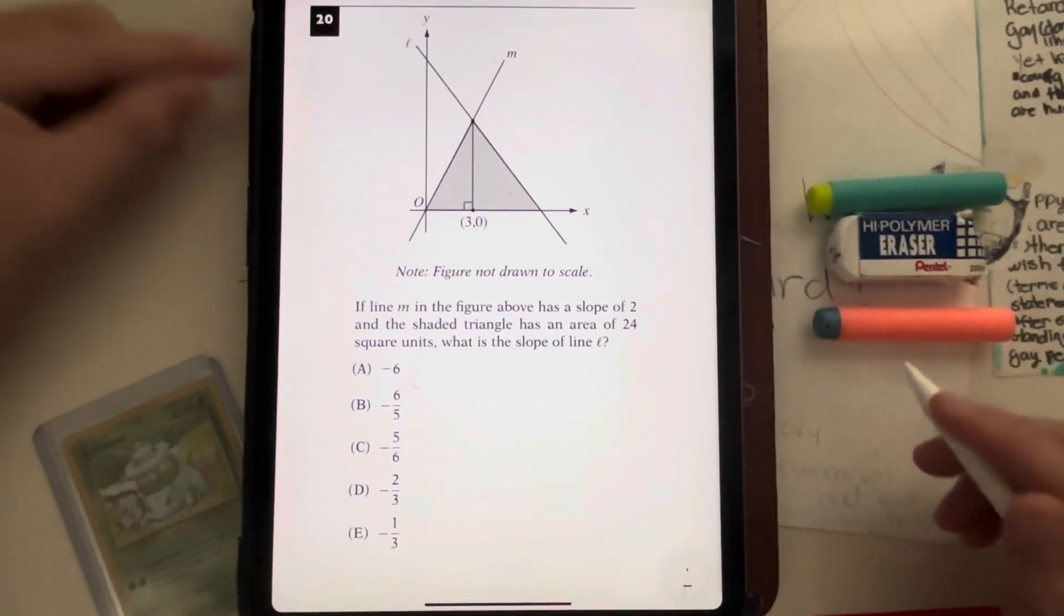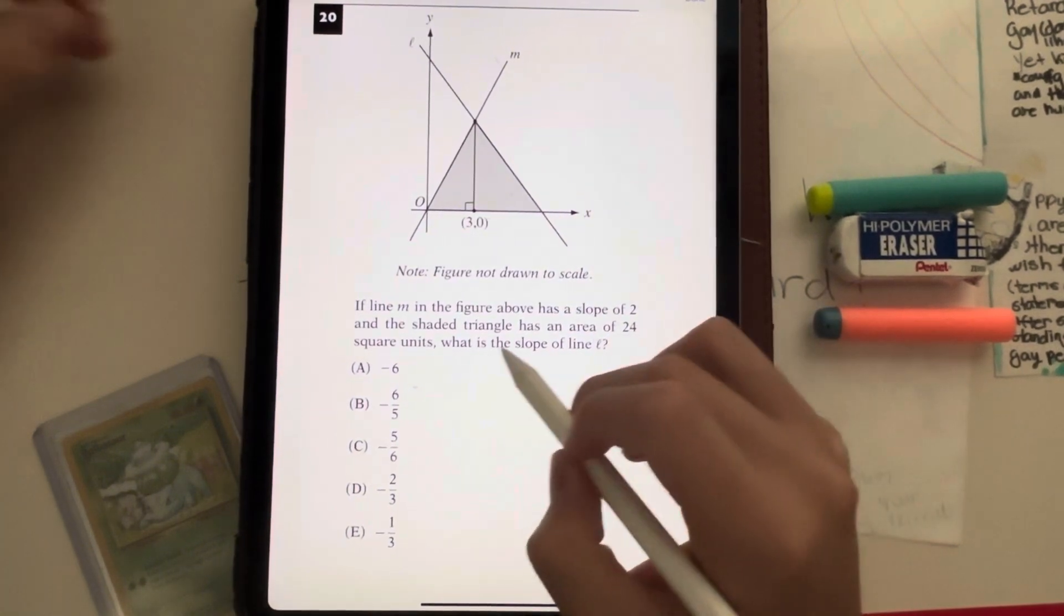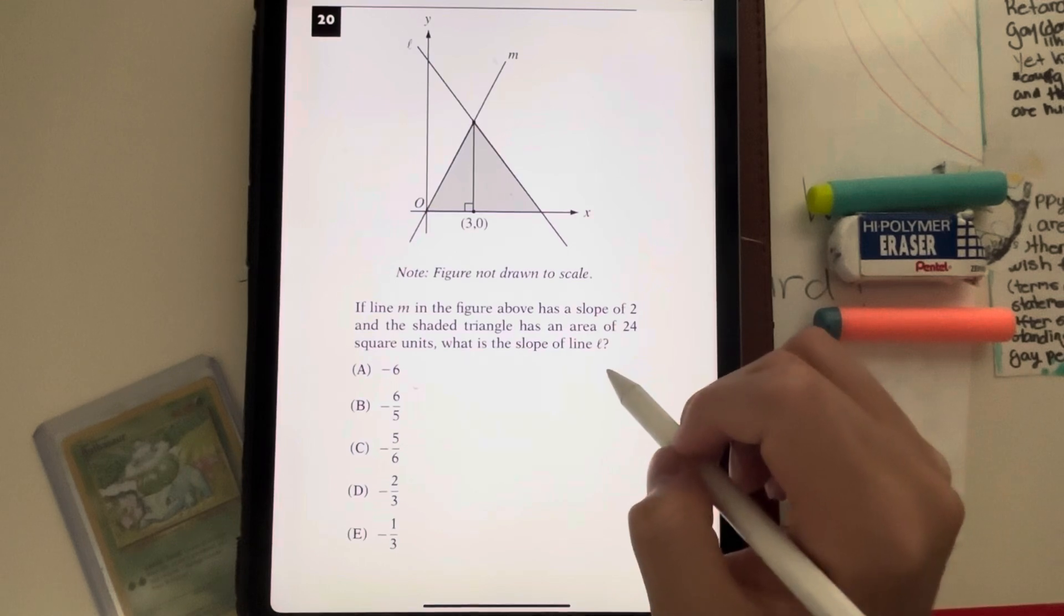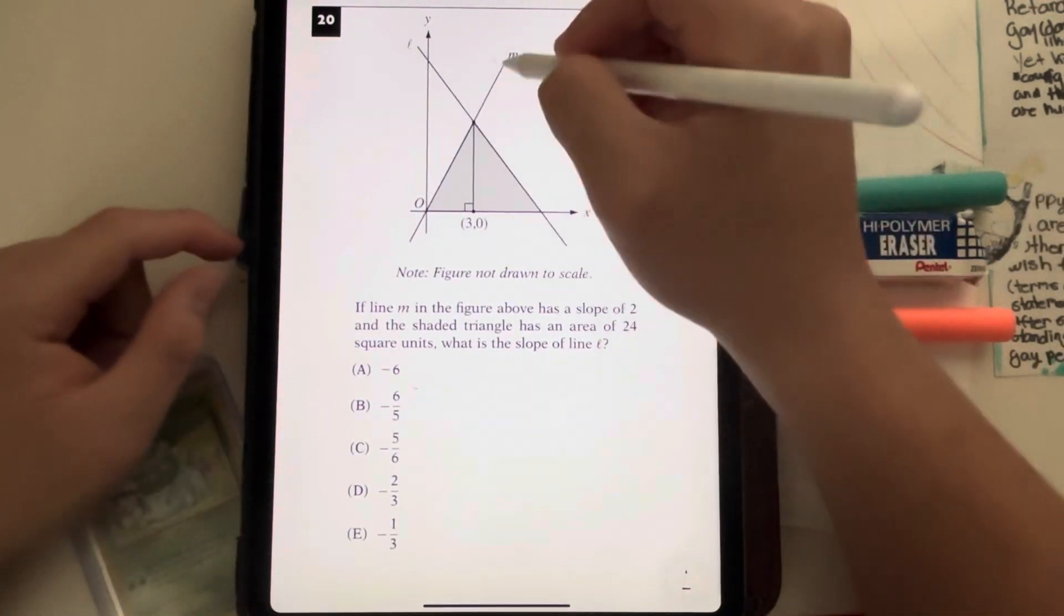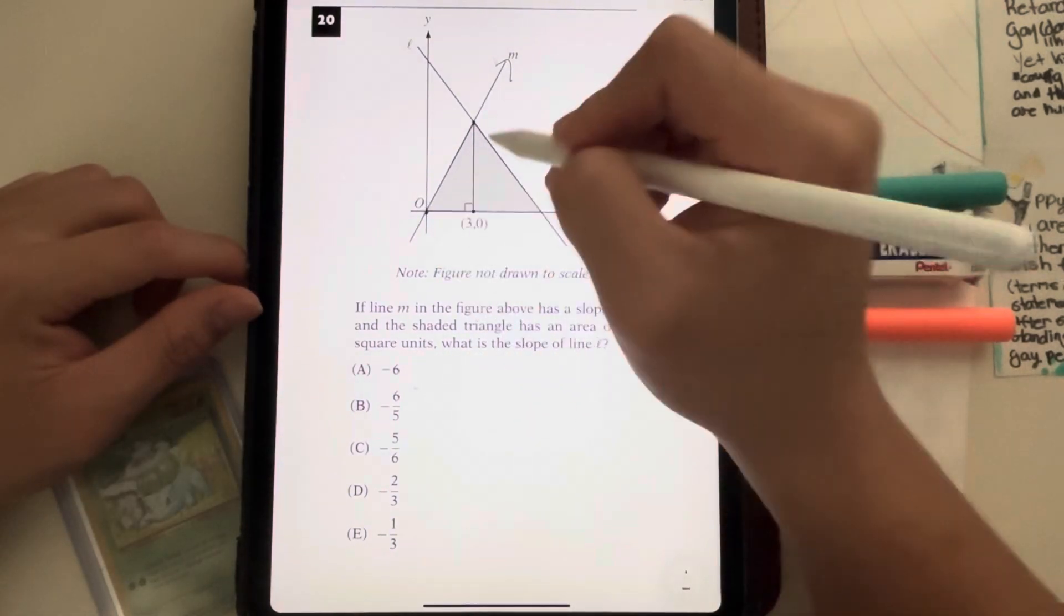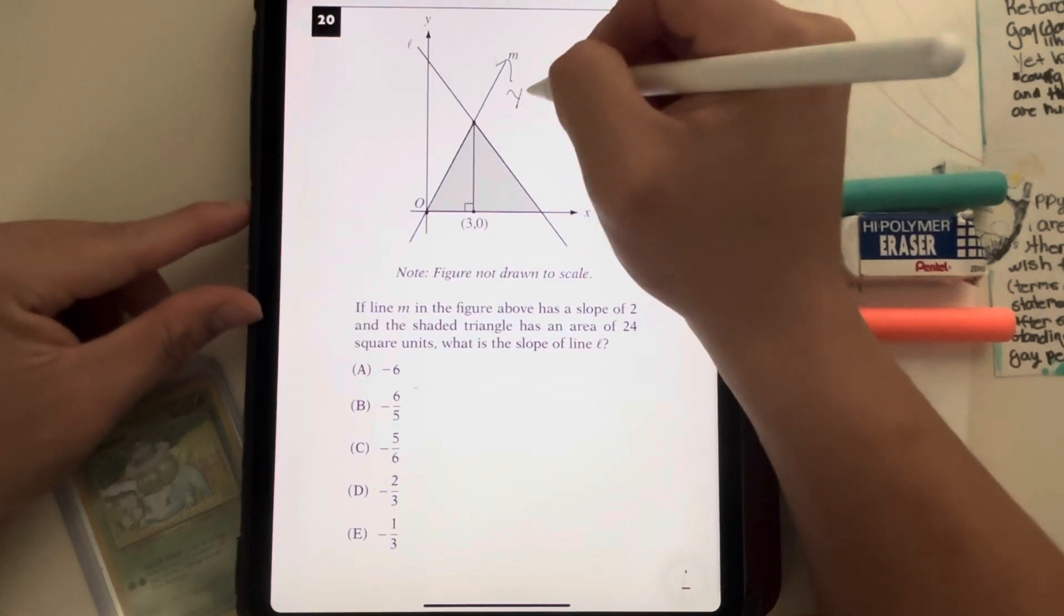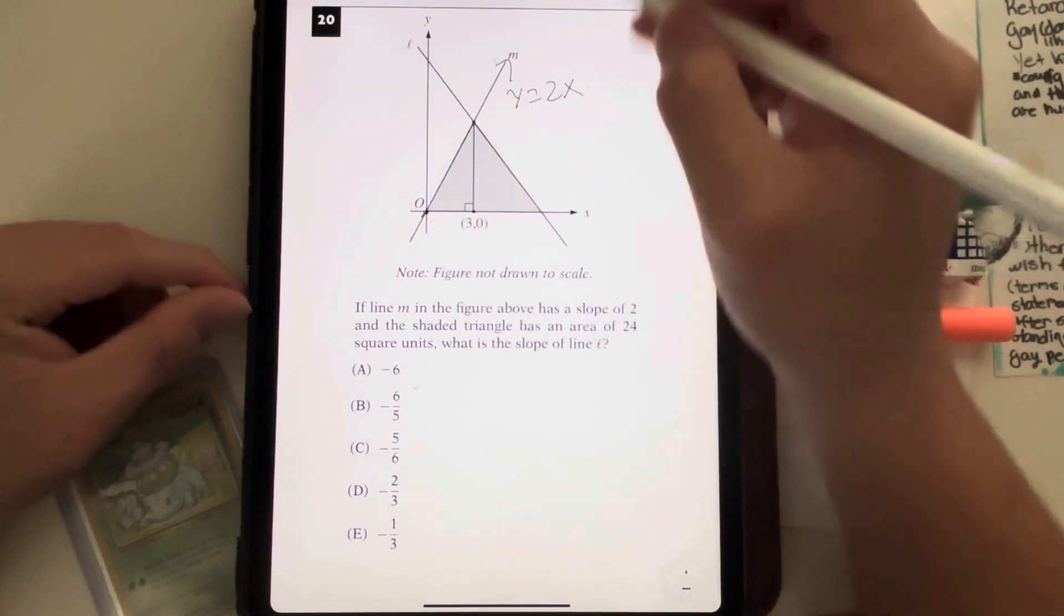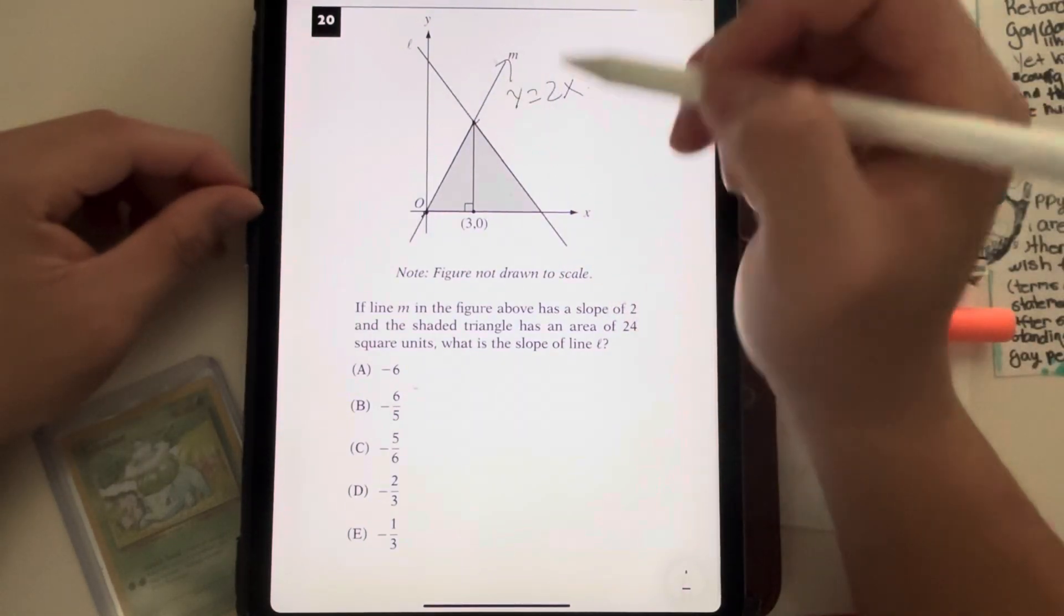Now this question is a bit of a tricky one. Question 20. In line M in the figure above has a slope of 2, and the shaded triangle has an area of 24 square units, what is the slope of line L? I noticed that it gives us that line M, which is this line right here, has a slope of 2, and I can see that this point is 0, 0. So what's the equation for line M? It's just going to be y is equal to 2x, because it has no y-intercept, but it has a slope of 2, so it's 2x.